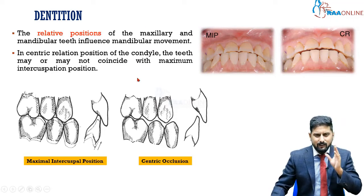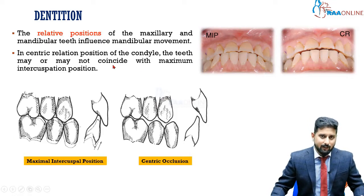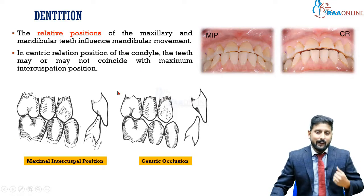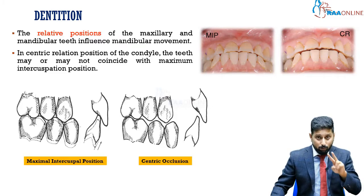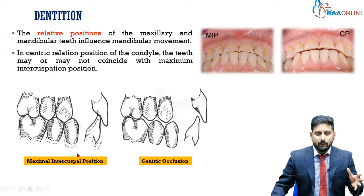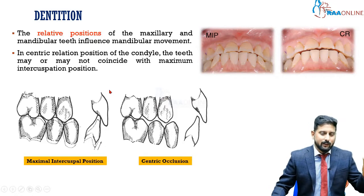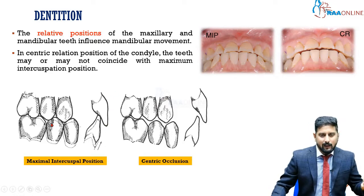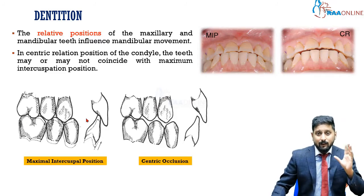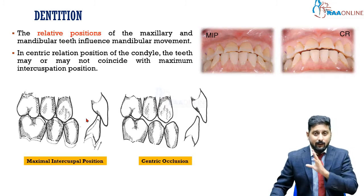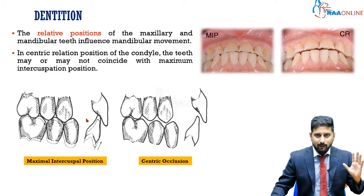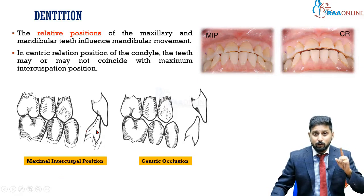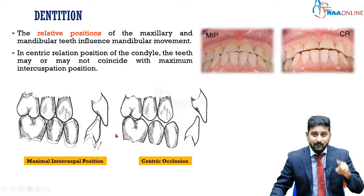A dentate individual usually has two types of occlusion. The most common is Maximal Intercuspal Position (MIP) — when you bite and clench your teeth, upper and lower teeth perfectly align with each other, with even load distribution and maximum contact of teeth anteriorly and posteriorly. You always naturally bite into MIP. But dentate individuals also have another occlusion: centric occlusal position.